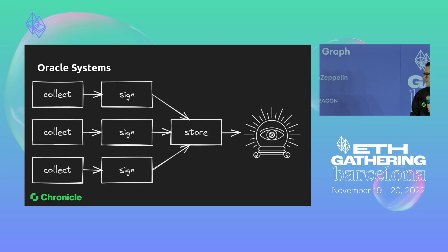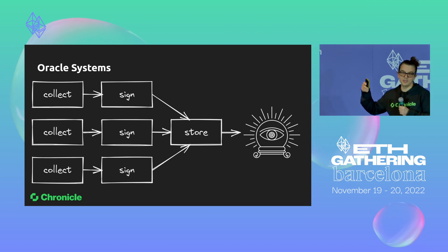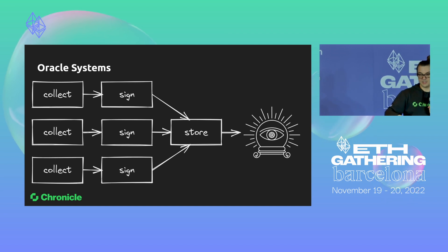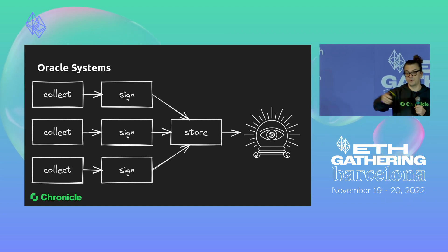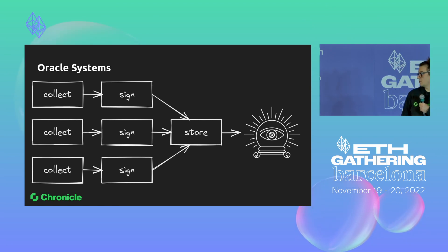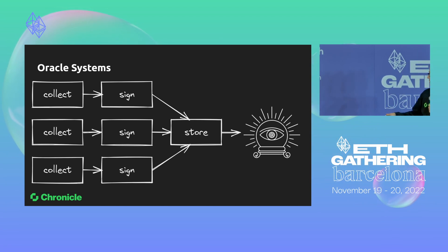As I said, it's a game of trade-offs. These are the mythical oracles, and we want them to be on-chain. As oracle builders, we are bridging the gap between the real world or other chains into the blockchain we want. I work for Chronicle.